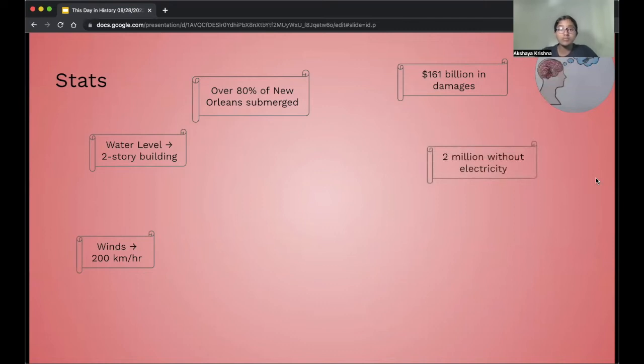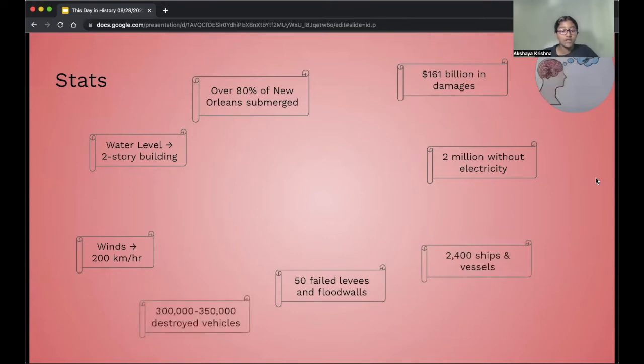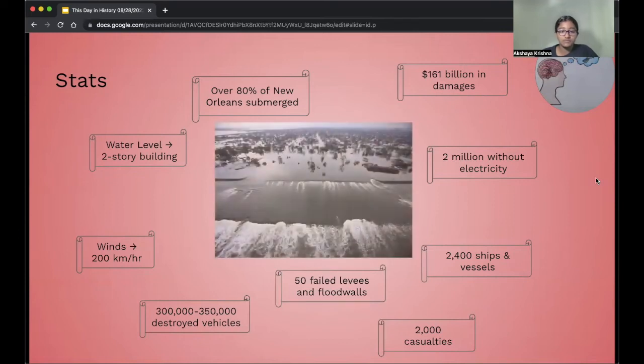Two million people went without electricity, and there were 50 failed levees and flood walls. 2,400 ships and vessels were destroyed, 300,000 to 350,000 destroyed vehicles, and there were 2,000 casualties. Here's a picture of Hurricane Katrina's damage.